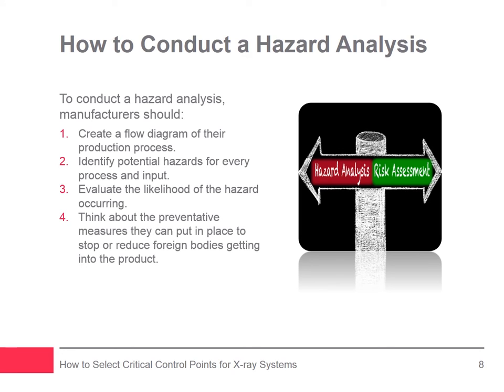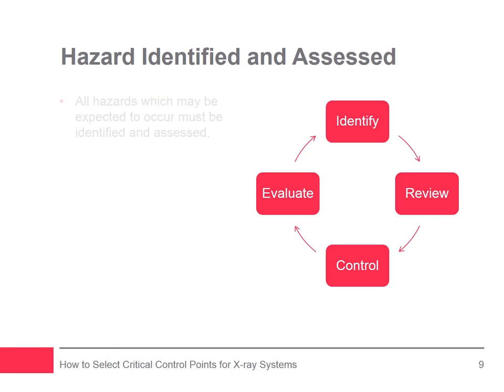Manufacturers should think about preventative measures that can be put in place to stop or reduce the risk of foreign bodies getting into the product. They should concentrate on operational procedures such as the frequency of maintenance, safety inspections, visual checks, encasing of the line, and training that will keep physical foreign bodies out. It's important to bear in mind that some hazards may require more than one preventative measure. A hazard analysis requires that all hazards which may be reasonably expected to occur — including hazards associated with the type of process and facilities used — are identified and assessed.